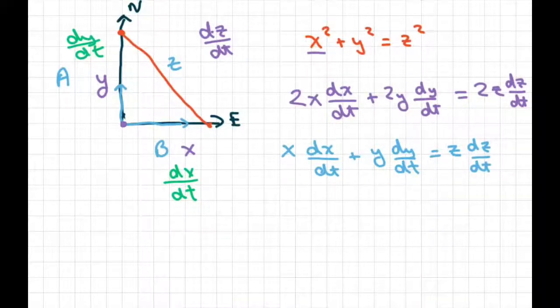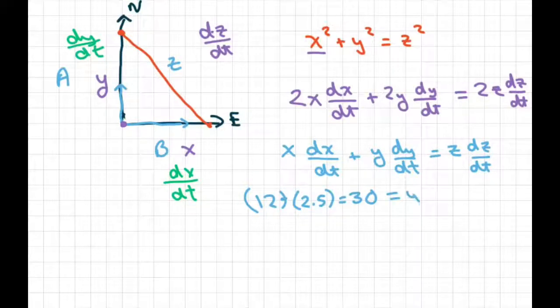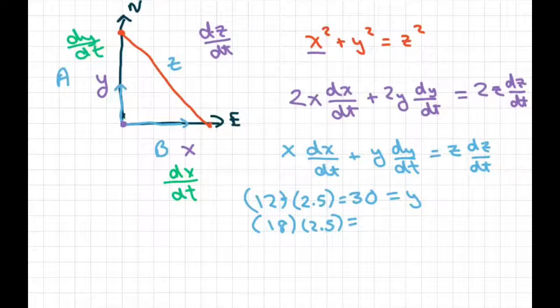All right. Now, after 2.5 hours, boat A has traveled 30 kilometers because we have, remember boat A, let's see, due north at 12. So we do 12 times 2.5 and that's going to give you 30. So that equals your Y. And then for B, what do we have for B? We had 18 times 2.5 and that's going to equal 45. And that's your X.